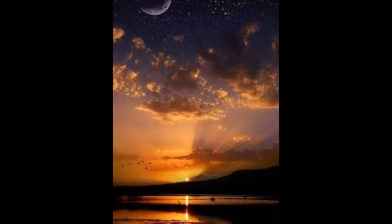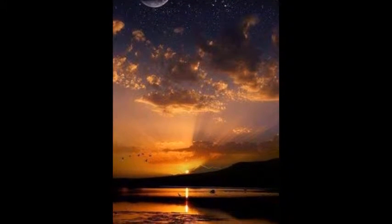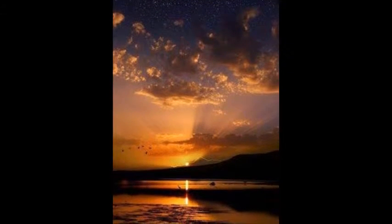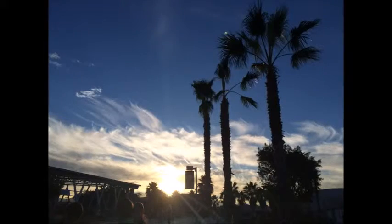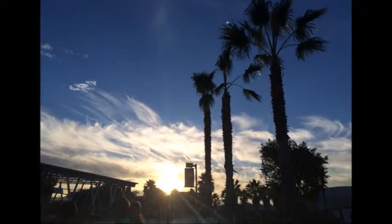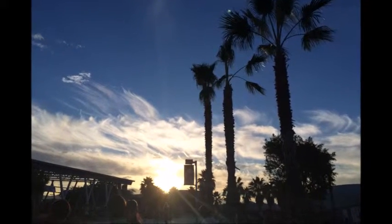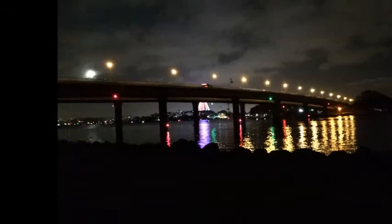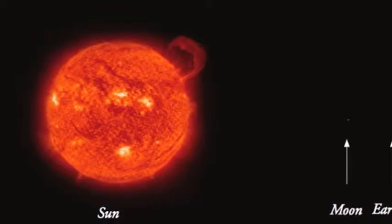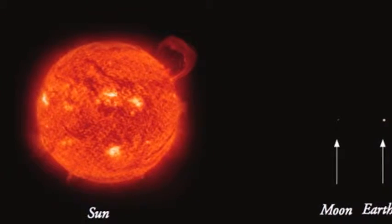In a way, distance decay can be compared to the differing gravitational pull between two objects. The moon, for example, is much smaller than the sun, but its close proximity to Earth exerts much more force on our oceans. In distance decay, the population of a place is compared to the different sizes of these celestial bodies.